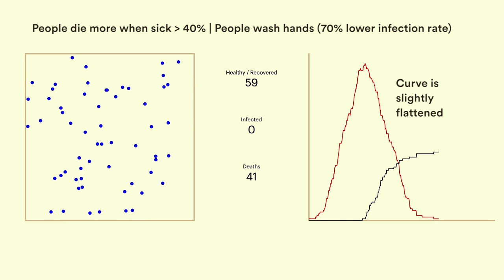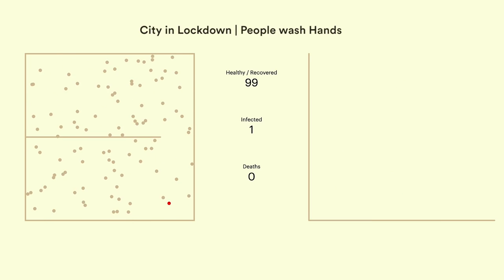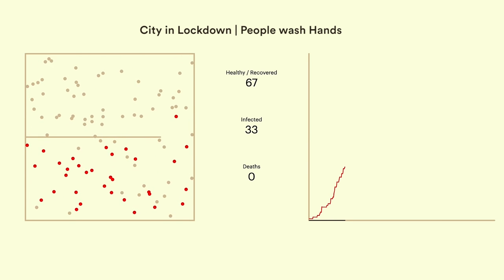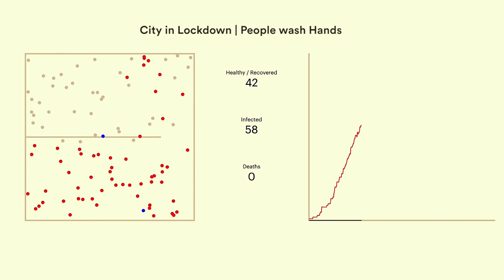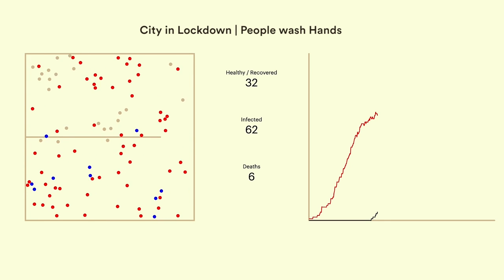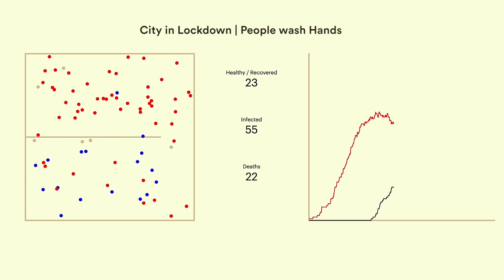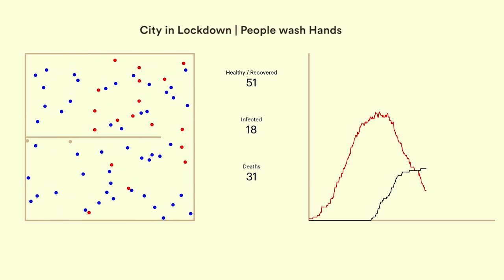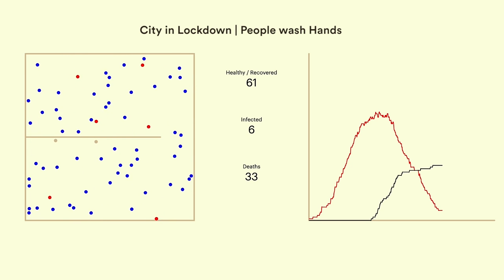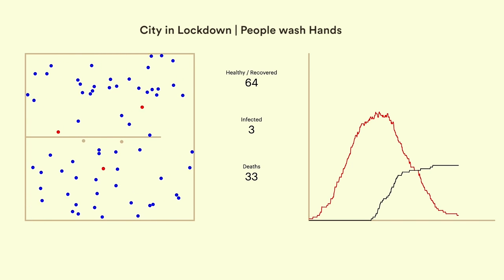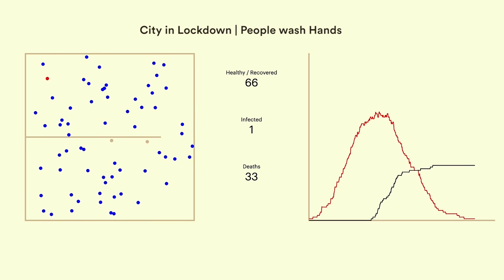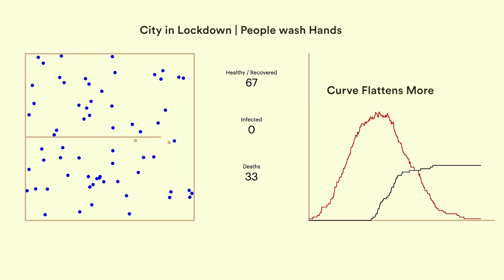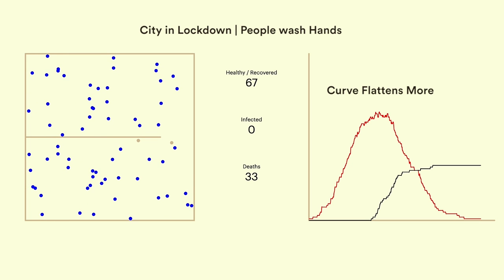For our third strategy, let's restrict the movement within the city — let's put the city in a lockdown. We'll ensure that people still wash their hands and we'll leave a small window open in the lockdown to reflect the real-world scenario. In this example, we see that deaths have dropped further to 33%. This drop, however, isn't much considering the amount of resources needed to ensure a lockdown. A lot of government officials have to patrol border areas and ensure nobody crosses it. This requires a lot of effort. What happens if we make the lockdown stricter, with far fewer people crossing the barrier?